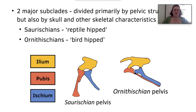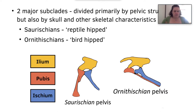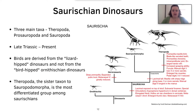There are two major subclades of dinosaurs, primarily divided by the pelvic structure as well as other skeletal factors. We have the Saurischians, which are the reptile hips, and the Ornithischians, which are the bird hips. The Saurischian is the more primitive of the two pelvic structures, where the pubis bone points forwards and the ischium points backwards, whereas with the Ornithischian pelvis the pubis runs parallel to the ischium. Interestingly, birds are derived from the lizard-hipped dinosaurs and not from the bird-hipped dinosaurs, which is quite confusing but is one of those strange outcomes in paleontology.